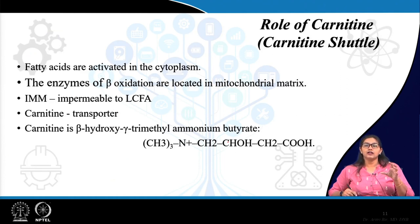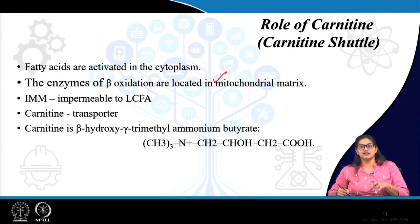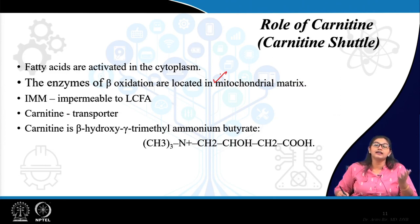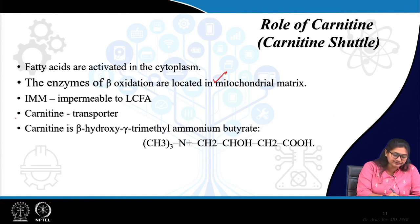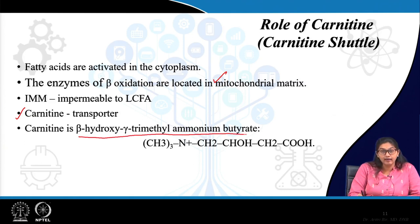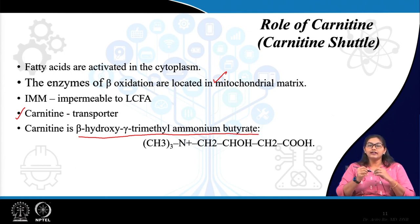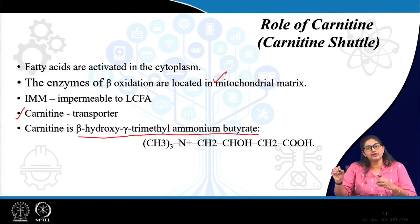After activation, the main beta oxidation occurs and the related enzymes are located inside the mitochondria. However, fatty acids are not freely permeable to the mitochondrial membrane, so a transporter is needed based on the molecule carnitine. Carnitine is beta-hydroxy-gamma-trimethyl ammonium butyrate, and it acts as a transporter for long-chain fatty acids. Fatty acids with 12 carbons or shorter can diffuse through the mitochondrial membrane and enter the mitochondrial matrix, but long-chain fatty acids are not freely permeable.